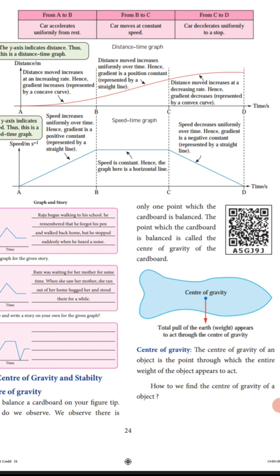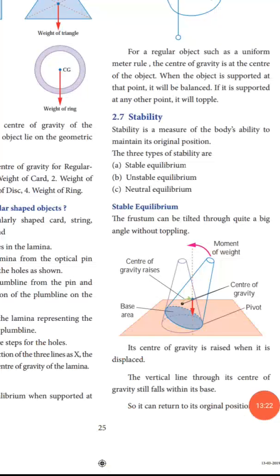Next, center of gravity. The center of gravity of an object is the point through which the entire weight of the object appears to act. Generally, the center of gravity of a geometrically shaped object lies at the geometric center of the object. Examples of center of gravity for regular objects include a chord, triangle, disc, and ring.